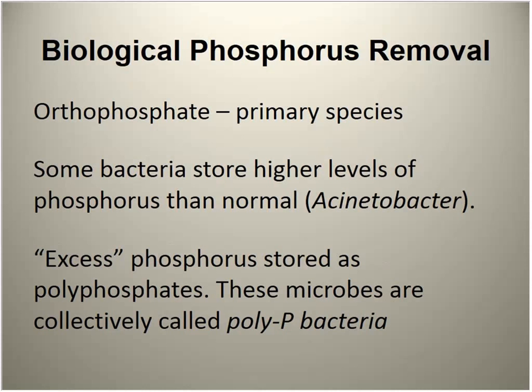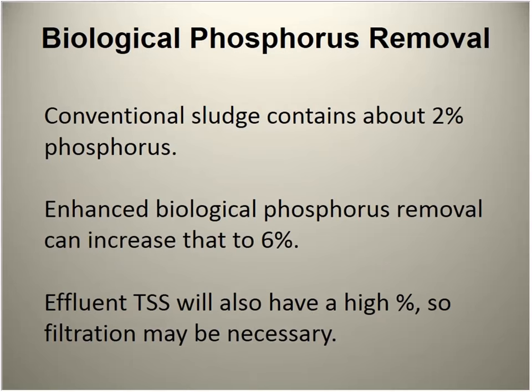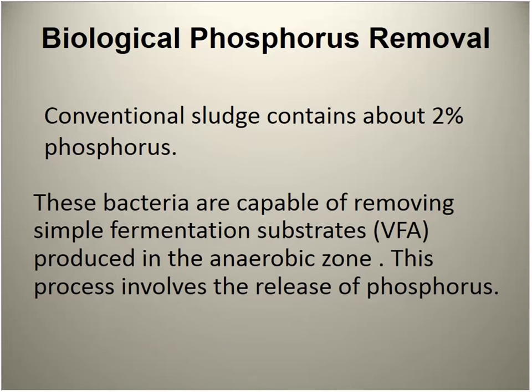The phosphorus we're dealing with is primarily orthophosphate. Organisms called poly-P bacteria can store excess phosphorus under the right conditions. Typically our sludge is about 2% phosphorus, but by manipulating these organisms to take up excess phosphorus, when we waste them they're actually about 6% phosphorus — that's how we remove it biologically. It goes out with the sludge. However, if there are clarifier upsets causing elevated suspended solids in the effluent, the phosphorus load in those solids will be elevated as well.